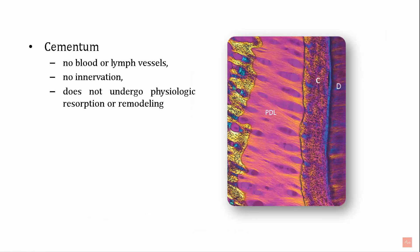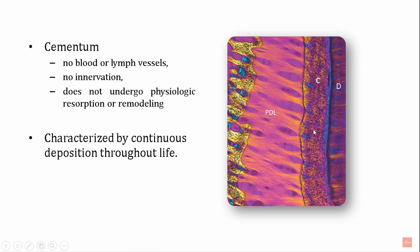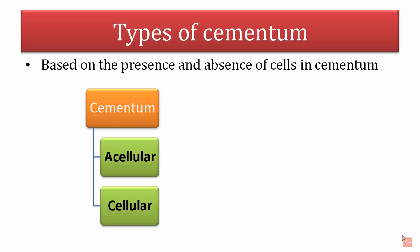Cementum does not have blood or lymph vessels, has no innervation, and does not undergo physiologic resorption or remodeling. As seen in the image, cementum is free of blood vessels or nerve endings. However, it is characterized by continuous deposition throughout life. Whenever there is trauma, fracture, or excessive orthodontic tooth movement, resorption can occur and cementum can fill those resorbed areas.